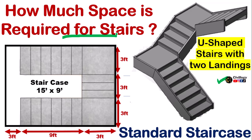Therefore, it is very important for architects and civil engineers to carefully design the stairs, keeping in mind the standard requirements for staircase and comfort of the users. In this video, we will learn how much space should be allocated for a staircase by considering the standard requirements for a good staircase. Particularly, we will calculate the space required for a U-shaped stair with two landings.